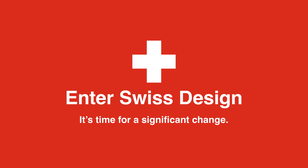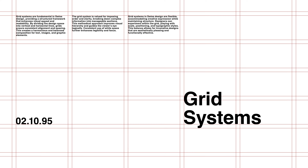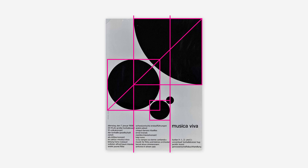Swiss design was a direct response to this need for clear and effective communication. It emphasized simplicity and readability above all else. This was achieved through the use of grid systems, which provided a structured framework for organizing content. The grid system ensured that all elements were aligned and balanced, creating a sense of order and harmony, making it easier for viewers to navigate and understand the information being presented.